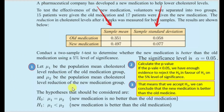For part two, we will use the calculator to help us calculate the value of P. Once we know the p-value, we will compare it to the significance level, which is 0.05. If the p-value is less than 0.05, we can confidently say that we reject H0 and we support the statement H1, based on the 5% level of significance.